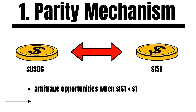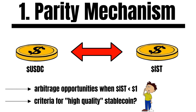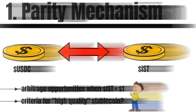The only risk here is how a high-quality stablecoin gets determined. After the UST drama, we can never be too sure about a stablecoin. But luckily, there are also other ways to mint IST.